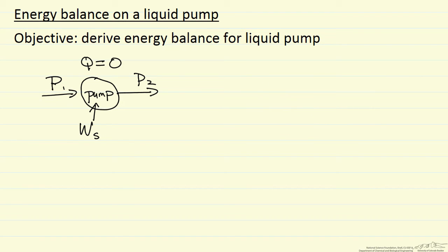The first law says mass flow rate times the enthalpy difference, so let's call this enthalpy H2 and H1, is the shaft work per time. This dot here means mass flow rate per time, and this is enthalpy per mass. Q dot is zero because it's adiabatic.